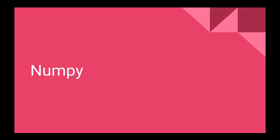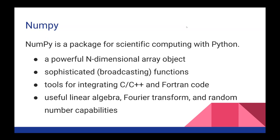NumPy is the one I was just talking about. NumPy is officially known as a package for scientific computing with Python. It has a powerful n-dimensional array object, sophisticated broadcasting functions, and most importantly, tools for integrating C, C++, and Fortran code, so it runs extremely fast. Since Python is an interpreted language, it usually runs a little slower than some other languages, but if you use NumPy, it can run at almost the same speed. It also includes things such as linear algebra, Fourier transforms, random number capabilities, and more — on top of Python's own mathematics standard library.